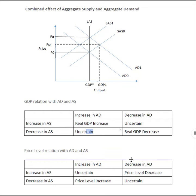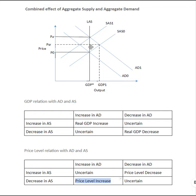Regarding price level: when aggregate demand is increasing, the price level increases. When aggregate supply is decreasing, the price level also increases. So an increase in aggregate demand and a decrease in aggregate supply together increase the price level. Conversely, a decrease in aggregate demand and an increase in aggregate supply will decrease the price level.